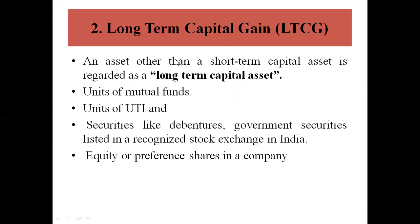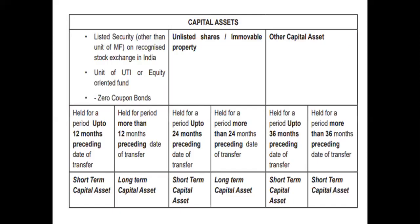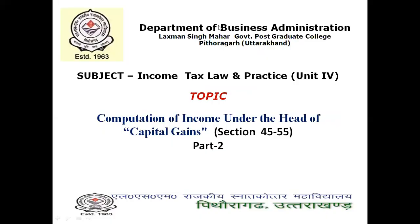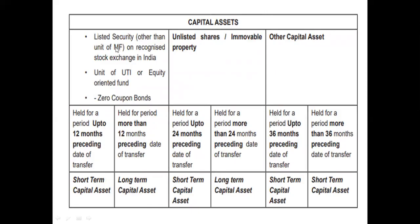Long-term capital gains arise on assets other than short-term capital assets. Securities like debentures, government securities listed on a recognized stock exchange in India, equity and preference shares in a company — all these are treated as long-term capital assets. Listed securities other than units of mutual funds on recognized stock exchange in India, UTI units, equity-oriented fund units, zero coupon bonds — if held for up to 12 months prior to date of transfer, these are known as short-term capital assets.